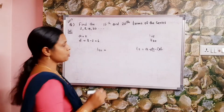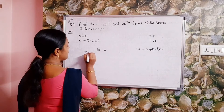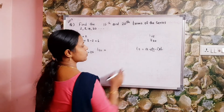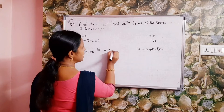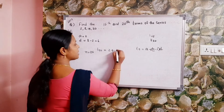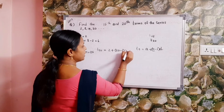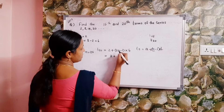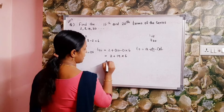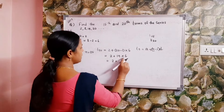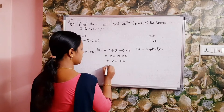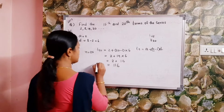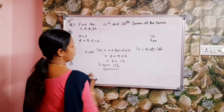Next we find t20, where n equals 20. We know that tn equals a plus n minus 1 into d. So t20 equals 2 plus 20 minus 1 into 6, that is 2 plus 19 into 6, which equals 2 plus 114. Therefore t20 is equal to 116.